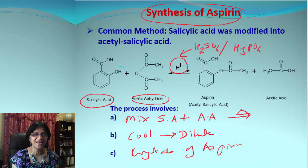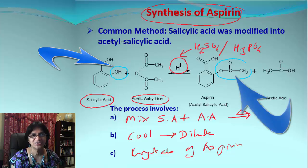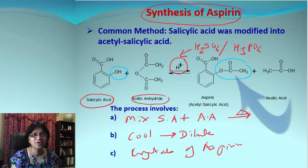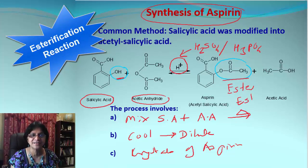Now look at the reaction carefully. We have an OH alcohol group which is converted to OCOCH₃. So the reaction is converting an alcohol to an ester — this is an esterification reaction. Pretty easy, right?